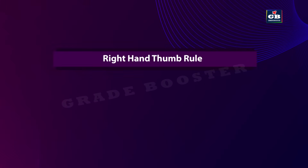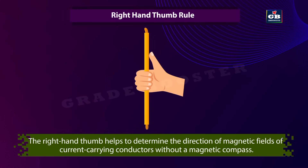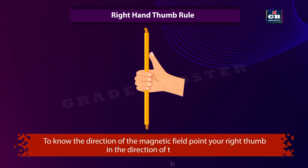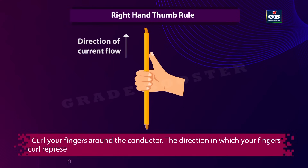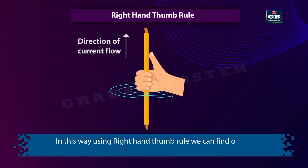Now let us see the right-hand thumb rule. The right-hand thumb rule helps determine the direction of magnetic fields of current-carrying conductors without a magnetic compass. Point your right thumb in the direction of the current and curl your fingers around the conductor. The direction in which your fingers curl represents the direction of the magnetic field lines around the conductor.